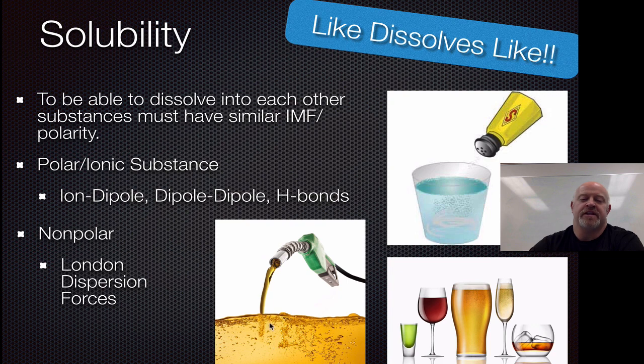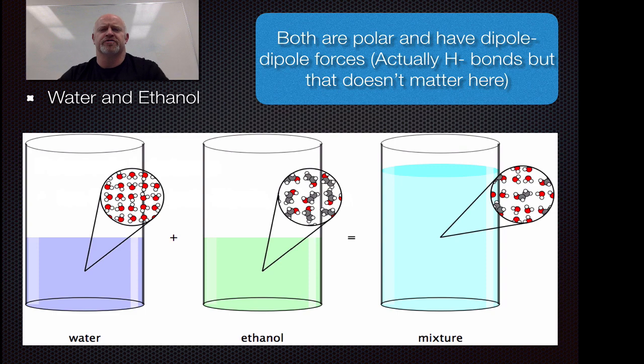Here's an example of gasoline, which is a mixture of non-polar things. Here we have salt in water, an example of ion-dipole interactions. And here we have different alcoholic beverages, which are ethanol dissolved in water - examples of dipole-dipole and hydrogen bonding interactions.